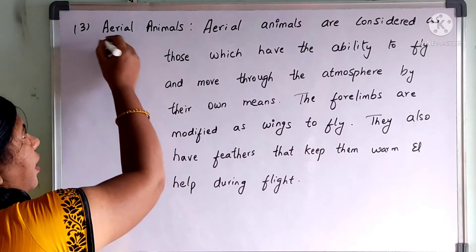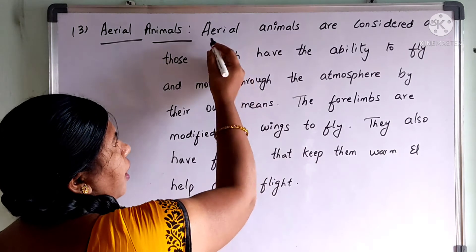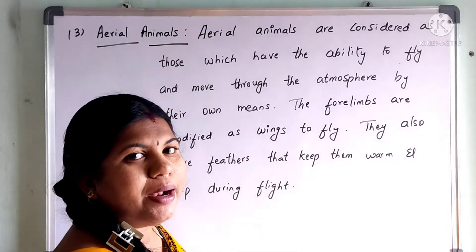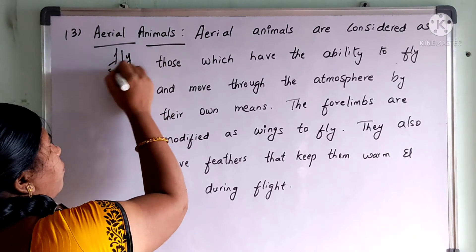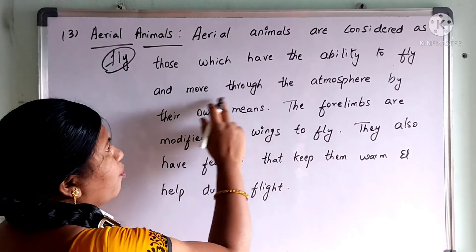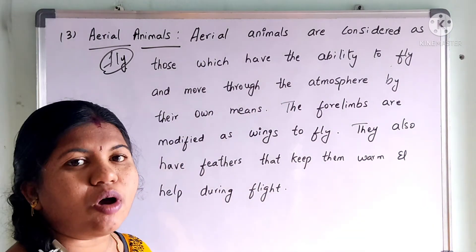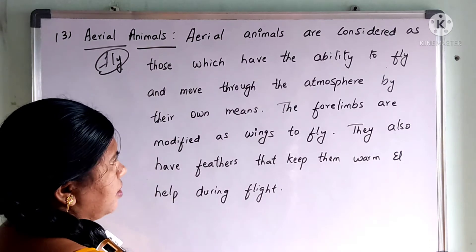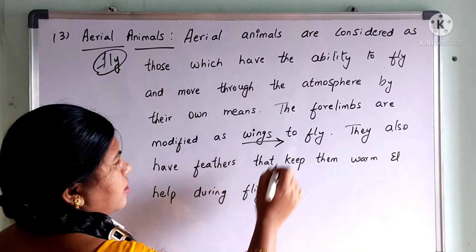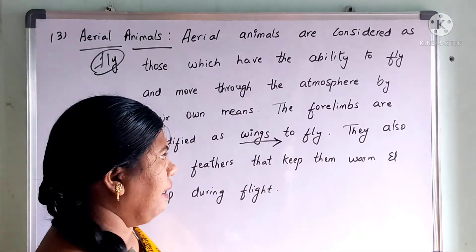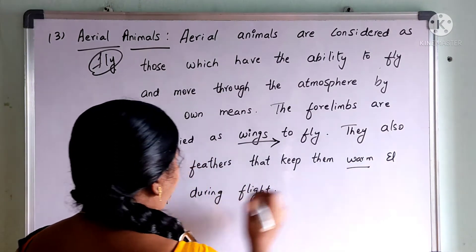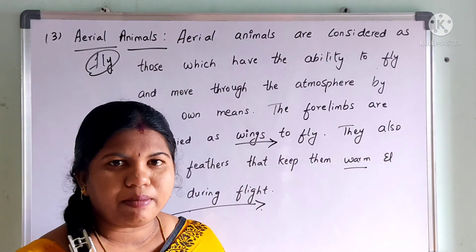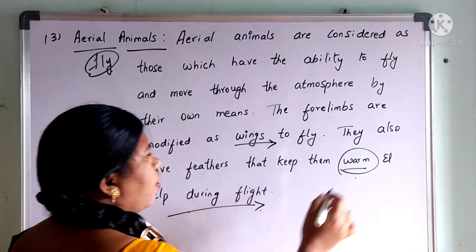Our third category is aerial animals. Aerial animals are those which have the ability to fly. Flying movement is present in these animals and they move through the atmosphere by their own means without any support. The forelimbs are modified as wings to fly, and they also have feathers.